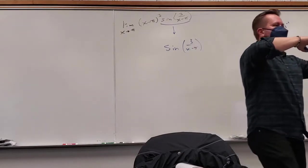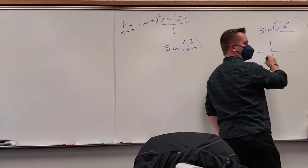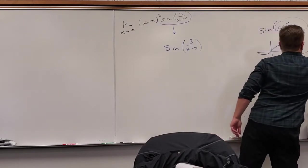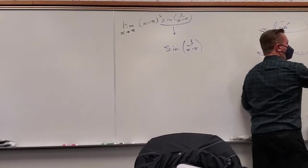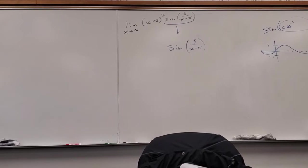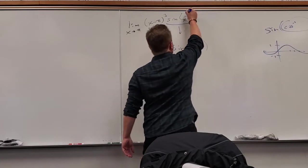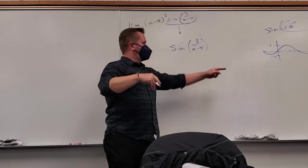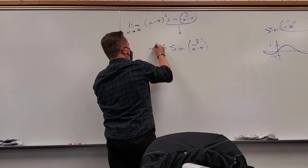Whatever you put inside sine, it's going to be a number. And sine always oscillates between negative one and one — forever, for every real number input (excluding complex numbers). So whatever the argument is for any value of x, the output of sine has to be between negative one and one. Therefore this expression is between negative one and one.